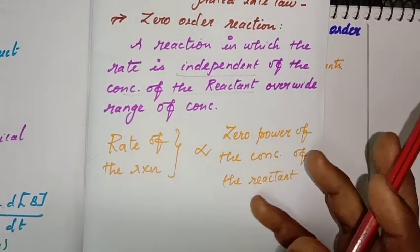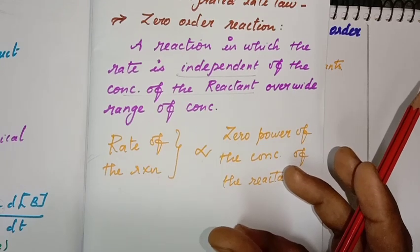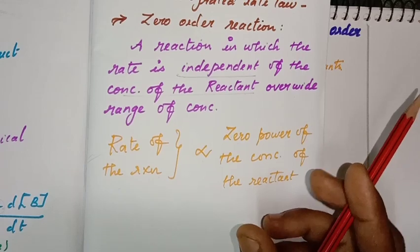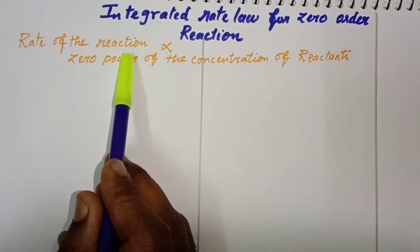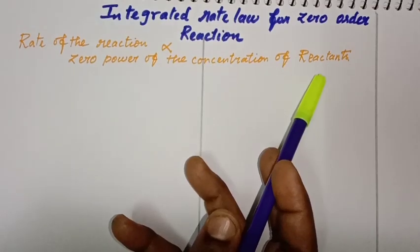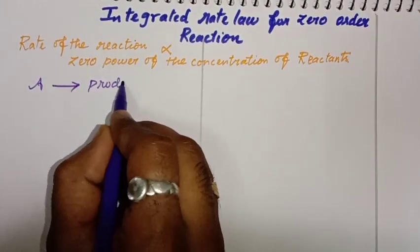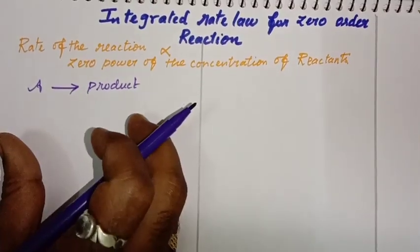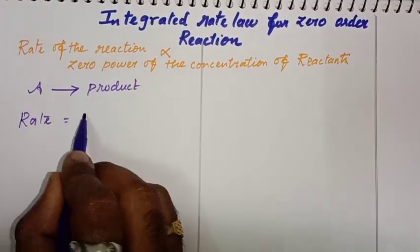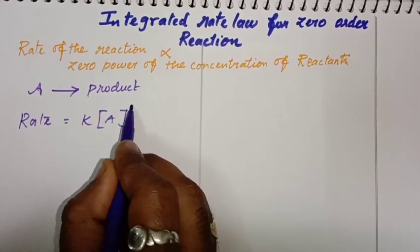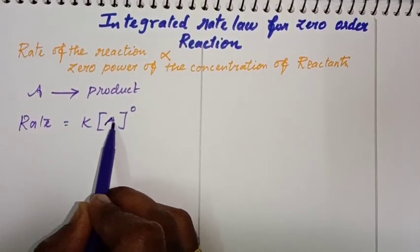For a zero order reaction, the reaction rate does not depend on the reactant concentration. That is, the rate of the reaction is proportional to the zero power of the concentration of the reactant — rate equals k times concentration of A to the power zero.